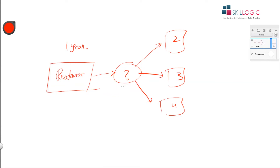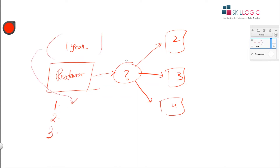A wrong decision might not only cause loss, it can also threaten the business. Especially in the current situation with all the crises going on, any wrong decision can become a threat to your survival itself. So opening up three more outlets is a significant investment of money. What kind of data from this one-year experience would you look at to make this decision — whether or not to open more restaurant branches?